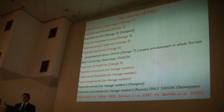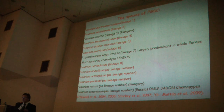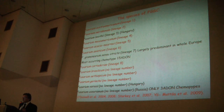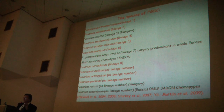In Europe, we have evidence that Fusarium graminearum sensu stricto is definitely the largely predominant species. Within Fusarium graminearum sensu stricto, the most occurring chemotype is 15-acetyl deoxynivalenol. There are two minor species identified in Hungary.